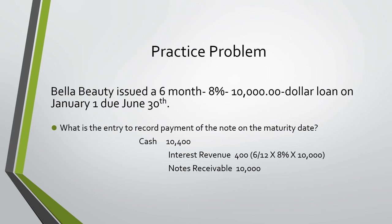What is the entry to record payment of the note on the maturity date? We would debit cash of $10,400. We would credit interest revenue of $400, which I got by doing six divided by 12 — because it's a six-month loan — times the eight-percent interest rate, times $10,000, which ultimately gave me $400. We would also credit notes receivable of $10,000 because we no longer expect to receive that money.